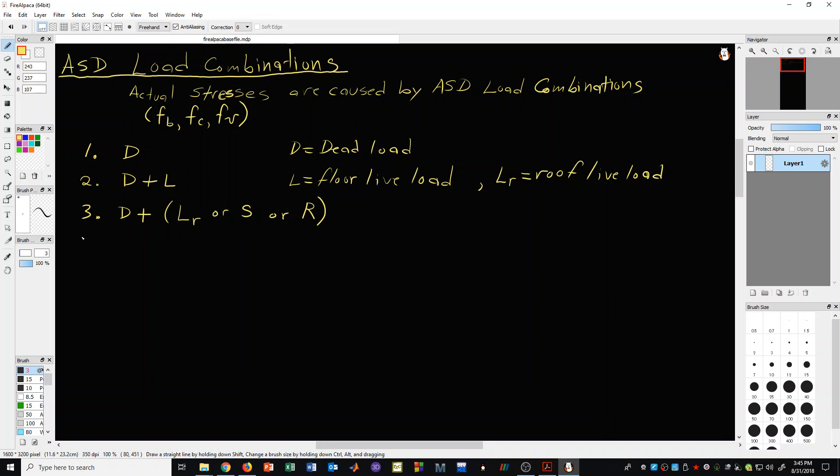Now, let's look at load combination 4. Here we have dead plus 0.75 times floor live plus 0.75 times roof live or snow or rain.